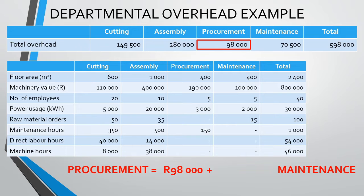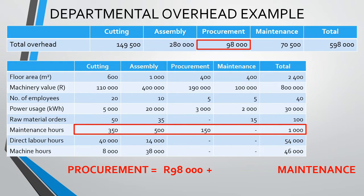The question is what proportion of the maintenance department needs to be added on? The answer is how much work did the maintenance department do for the procurement department? Be very careful here as this part can be confusing. We know that maintenance is allocated based on maintenance hours. The maintenance department did a total of 1,000 hours during the period, of which 150 hours related to the procurement department. Therefore, 150 out of the 1,000 should be allocated to procurement.